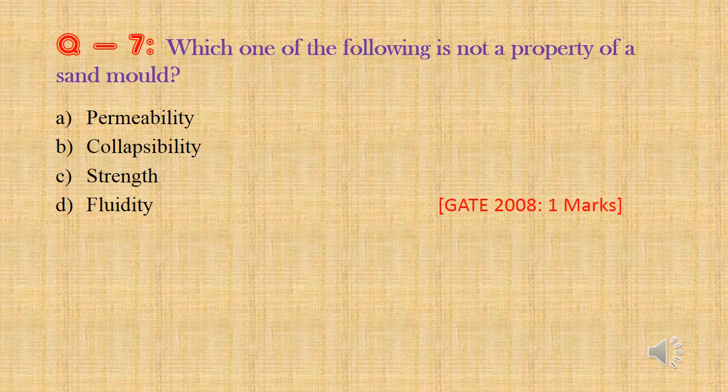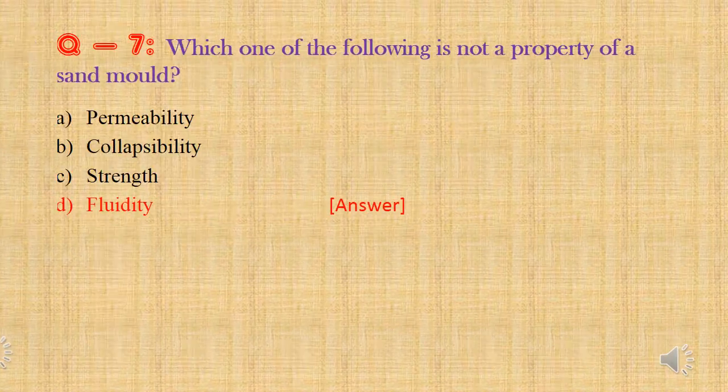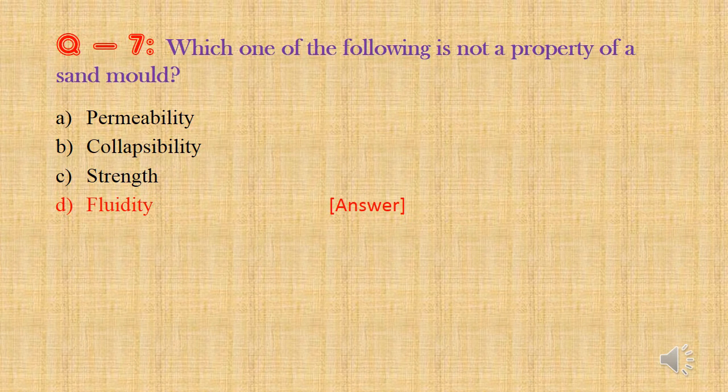Question 7: Which one of the following is not a property of sand mold — Option a: Permeability, Option b: Collapsibility, Option c: Strength, Option d: Fluidity. Except fluidity, permeability, collapsibility and strength are all properties of sand mold. So the answer is Option d: Fluidity.